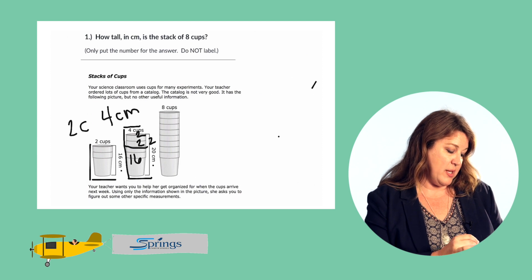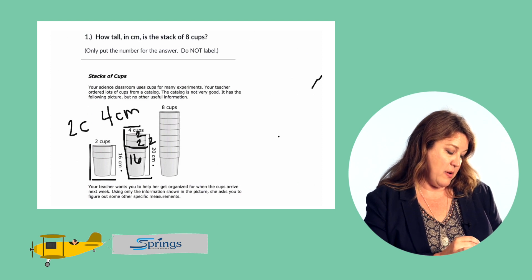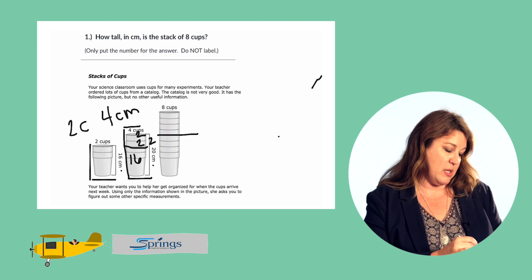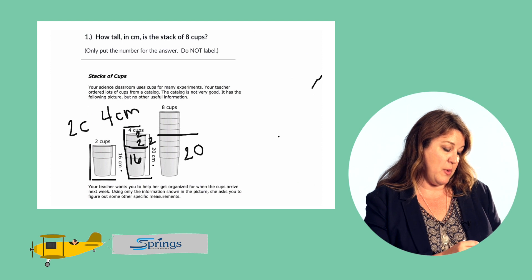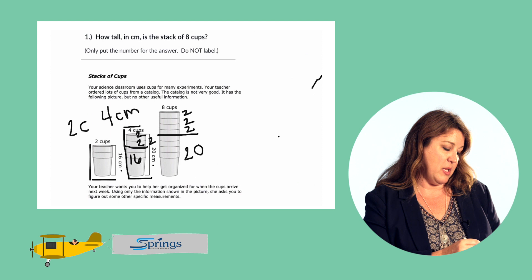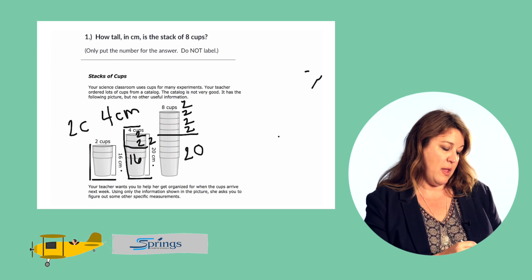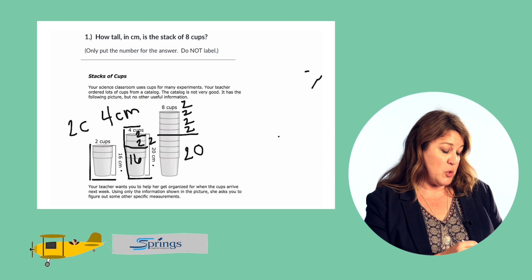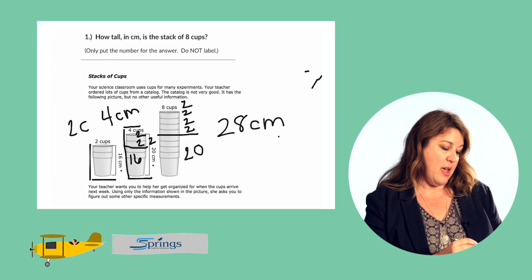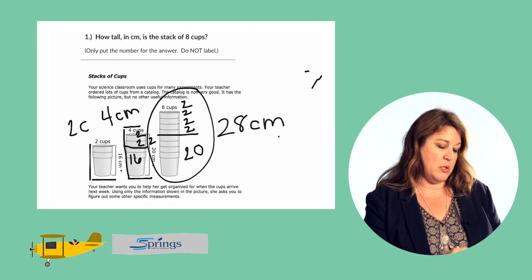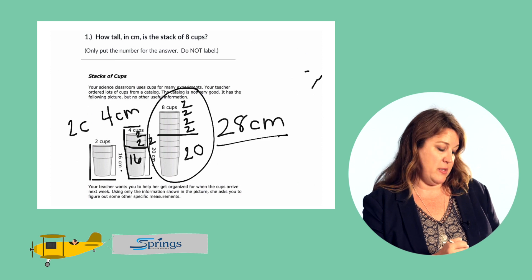So let's figure out how tall this stack is. Four cups in the stack we know is equal to 20. We know that each additional cup is equal to two. So we have two plus another two plus another two plus another two. So when we add those 20 plus this additional eight, we have an answer of 28 and we can say that this stack of eight cups is equal to 28 centimeters. And that's all we need to do to solve problem number one.